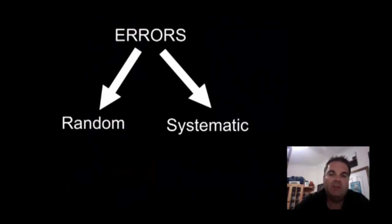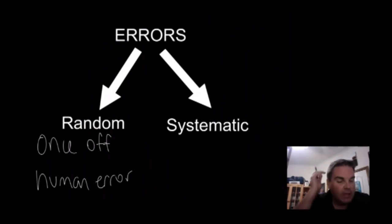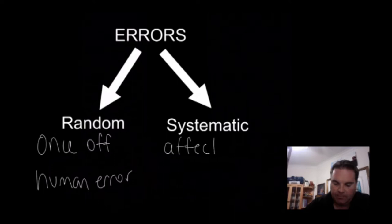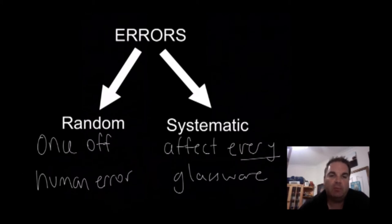The first type are what we call random errors. Random errors are a once-off, and normally they're the result of human error. So if it only affects you once in the titration and three calculations, it's going to be a random error. Systematic errors will affect every calculation, every calculation. They're normally as a result of glassware or apparatus that you use. Quite often you prepare things like that and that will be a source of systematic error.